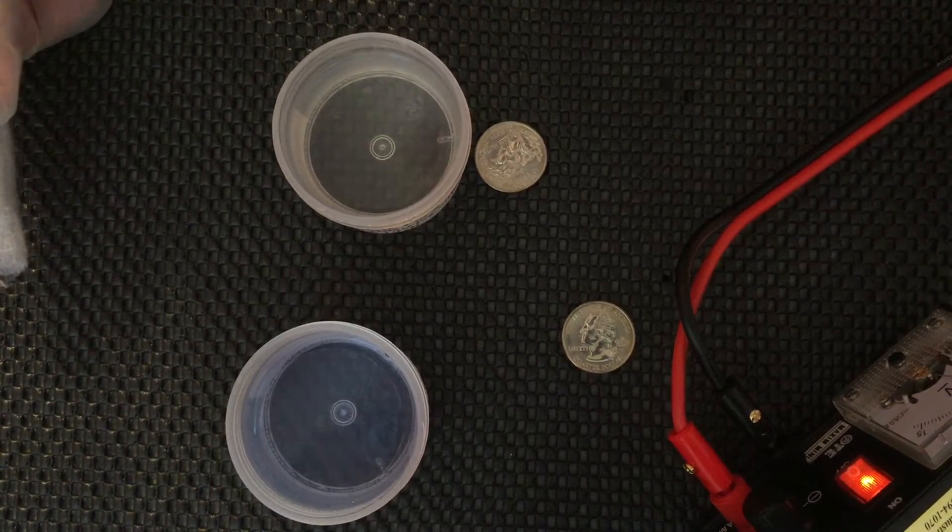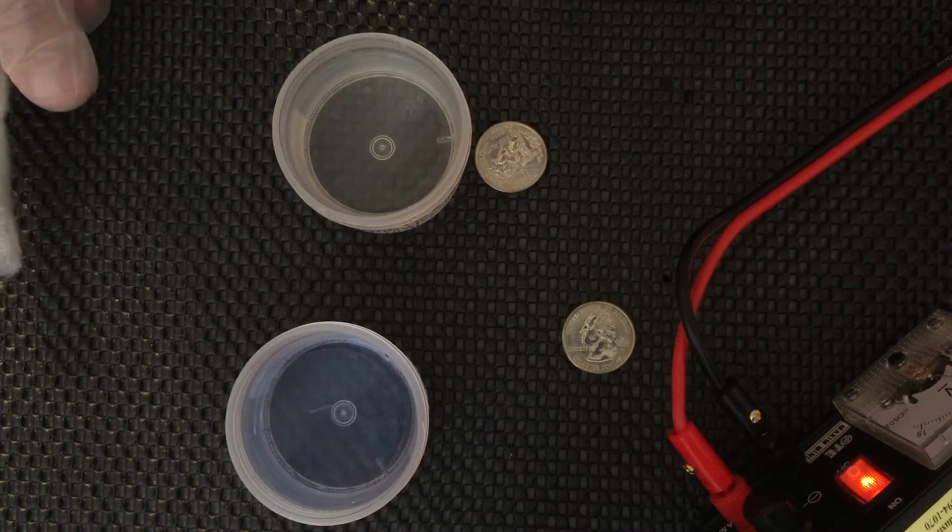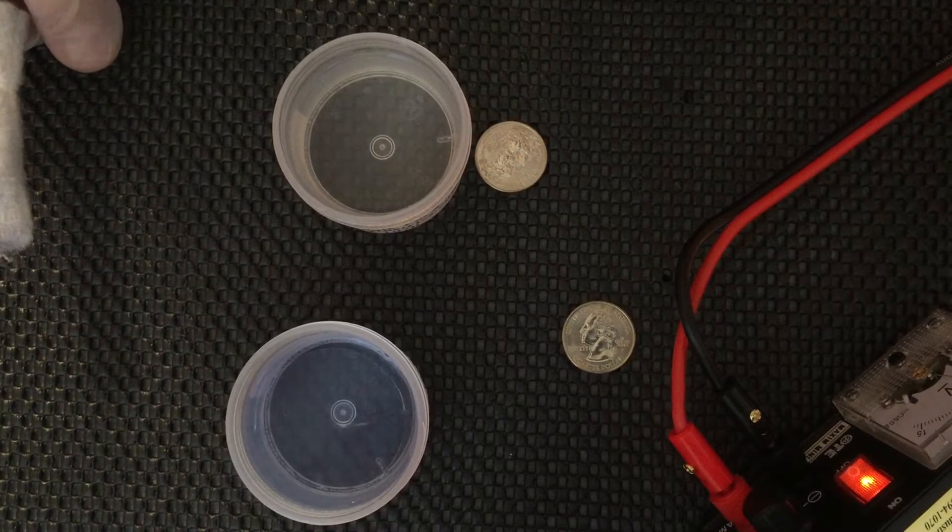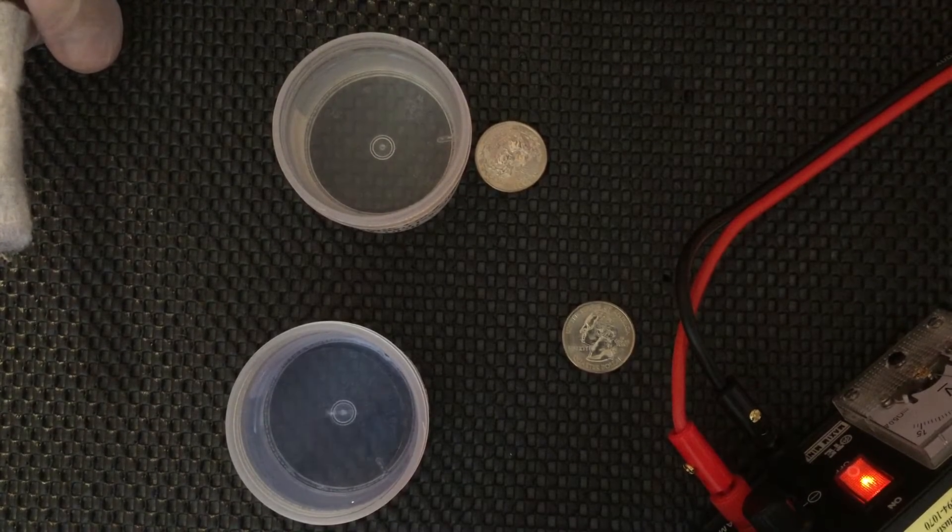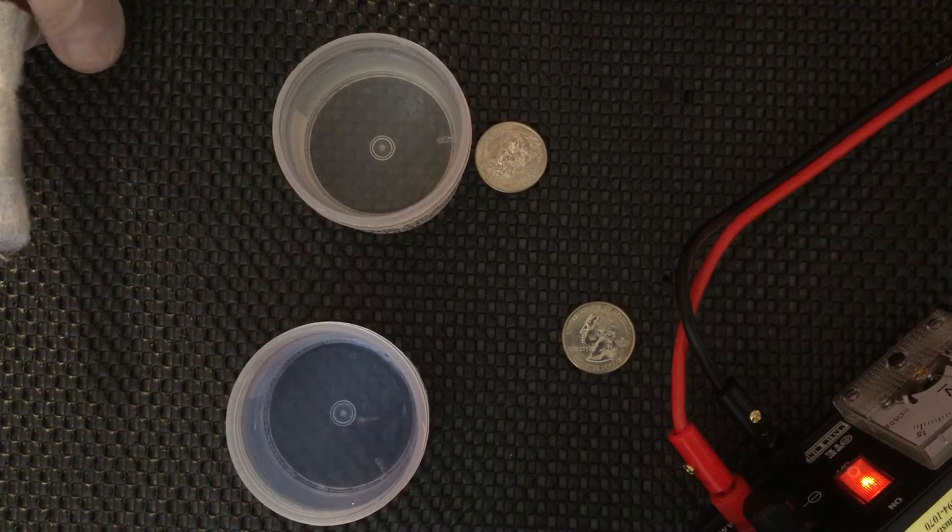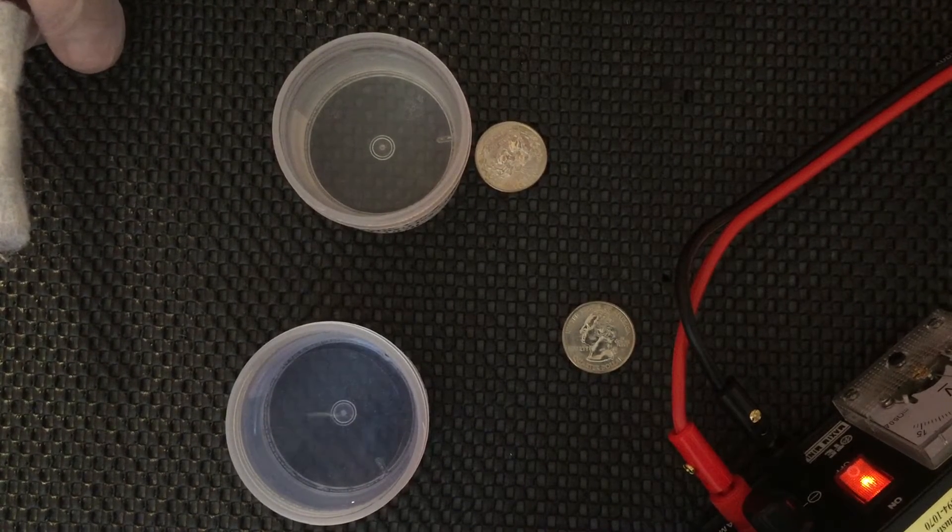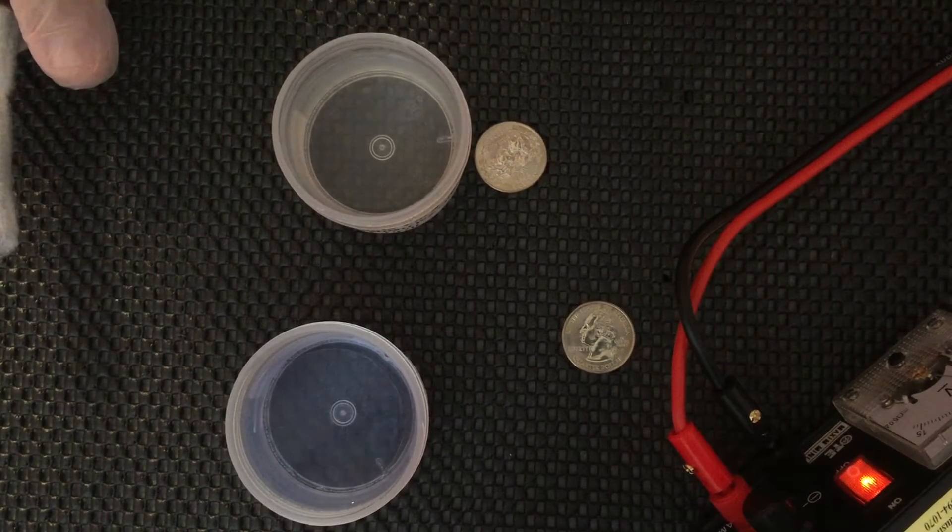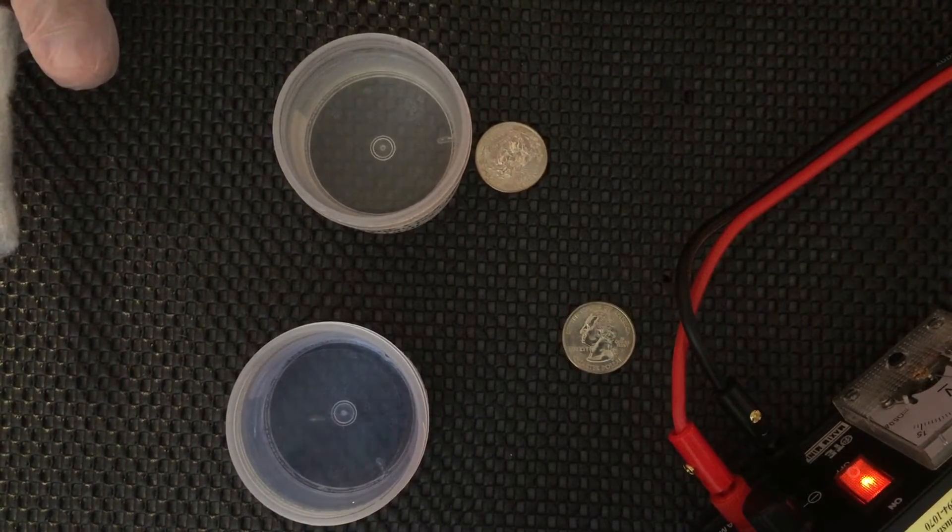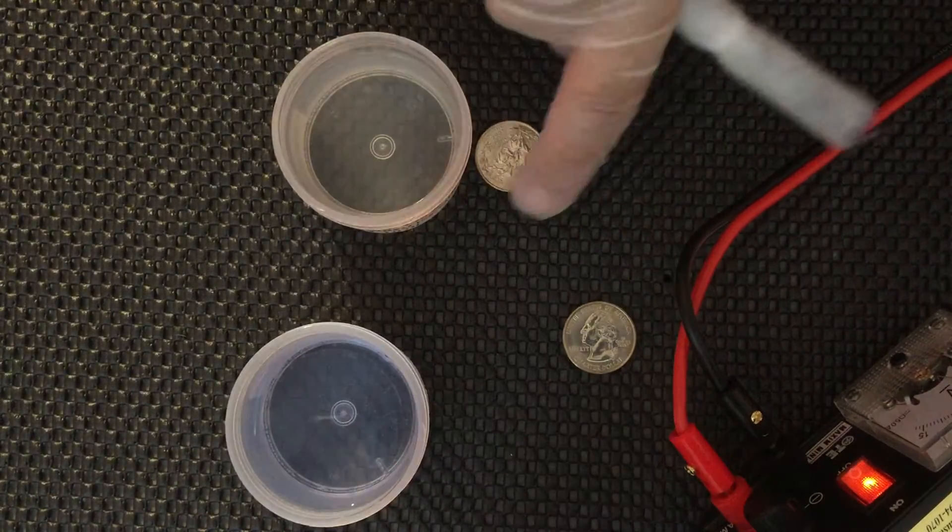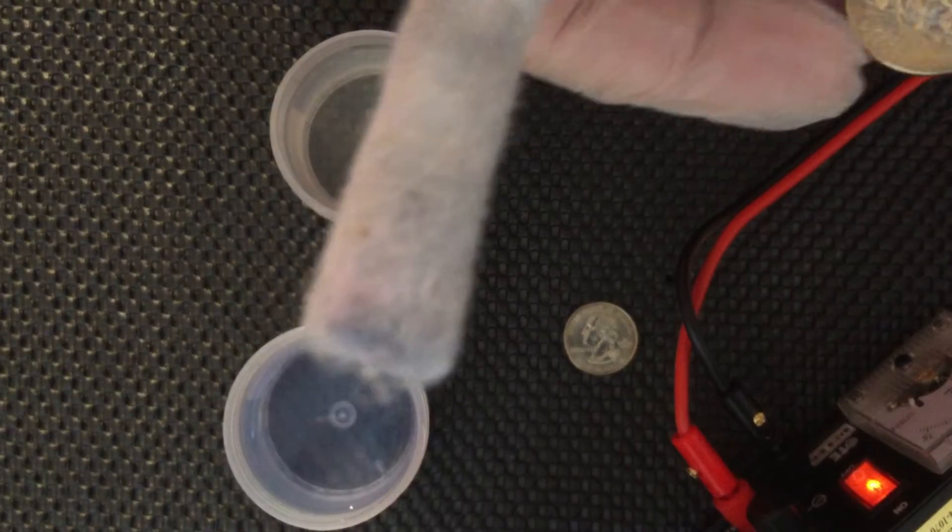If you're using any parts that are chrome plated, then it's a three-step process: you first use chrome stripper to strip the chrome from the part, rinse it, then apply the nickel activator, rinse it, and then gold plate.